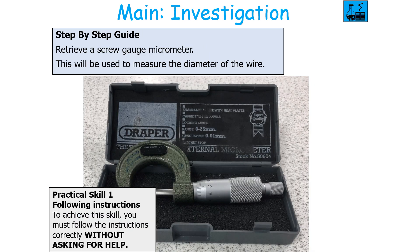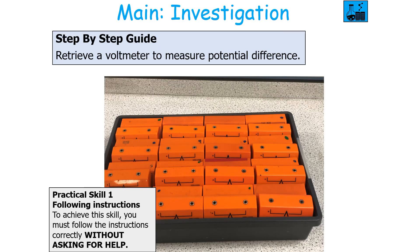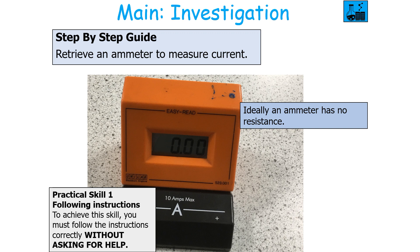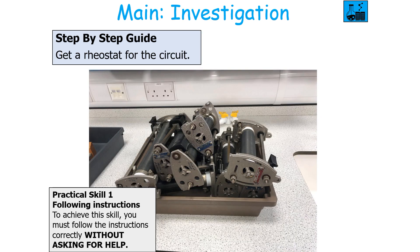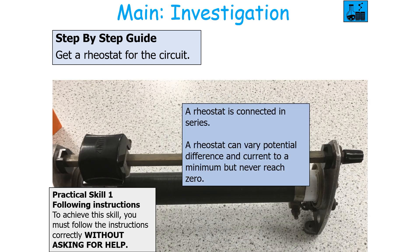To measure the diameter of the wire you would use a screw gauge micrometer, which can measure to a resolution of 0.01 millimetres. You would then need a voltmeter to measure potential difference — ideally a voltmeter has infinite resistance. You would also need an ammeter to measure current — ideally an ammeter has no resistance. You would then get a rheostat for the circuit, which is a variable resistor with two connectors that can vary potential difference and current to a minimum, but those values can never reach zero.